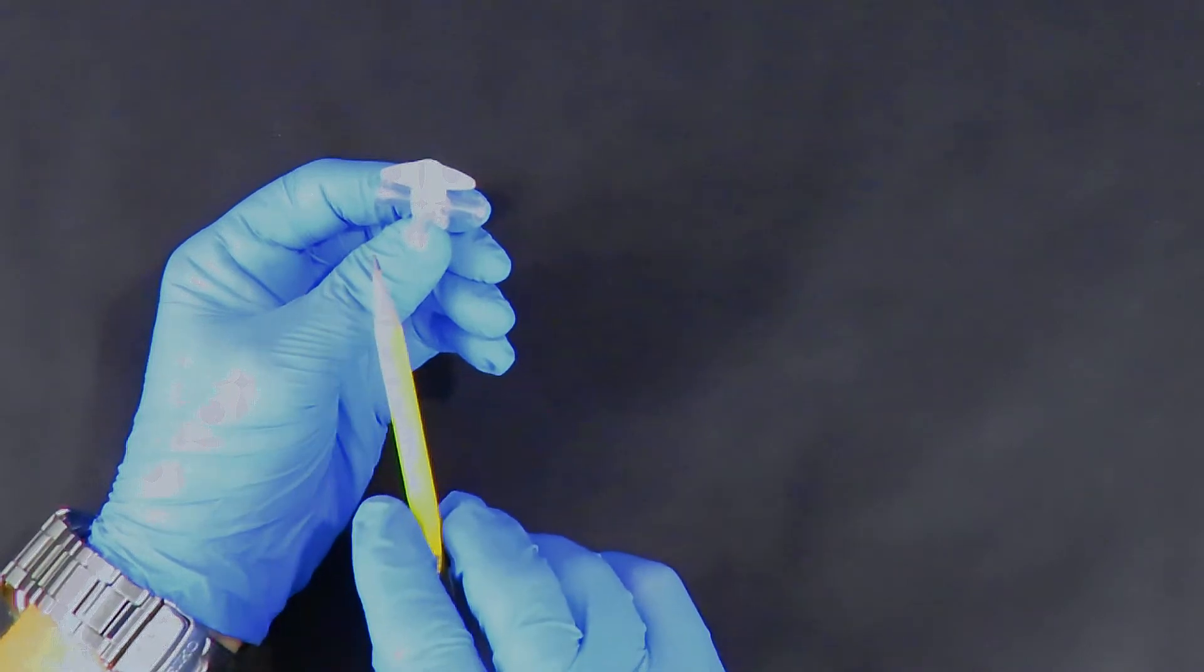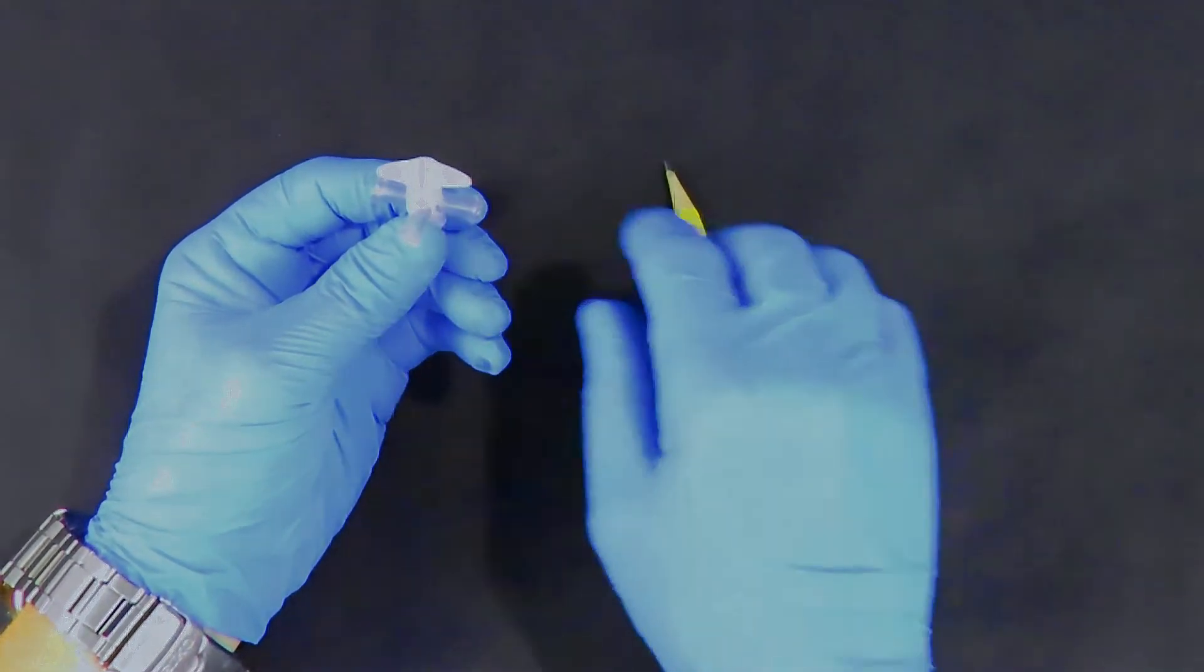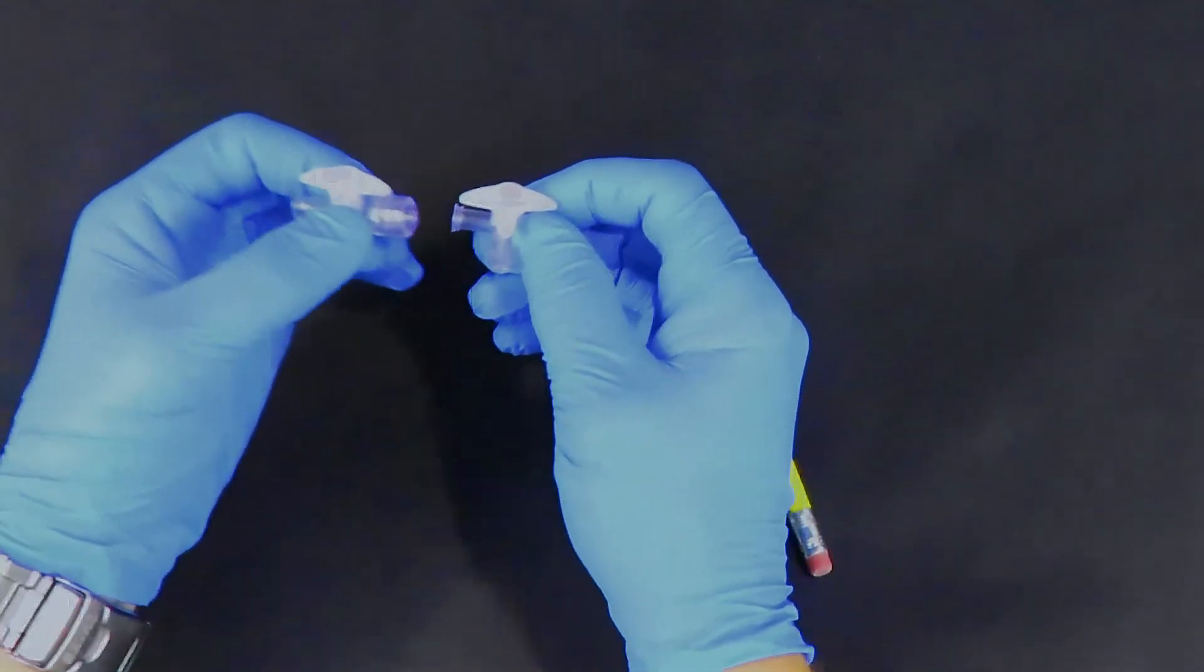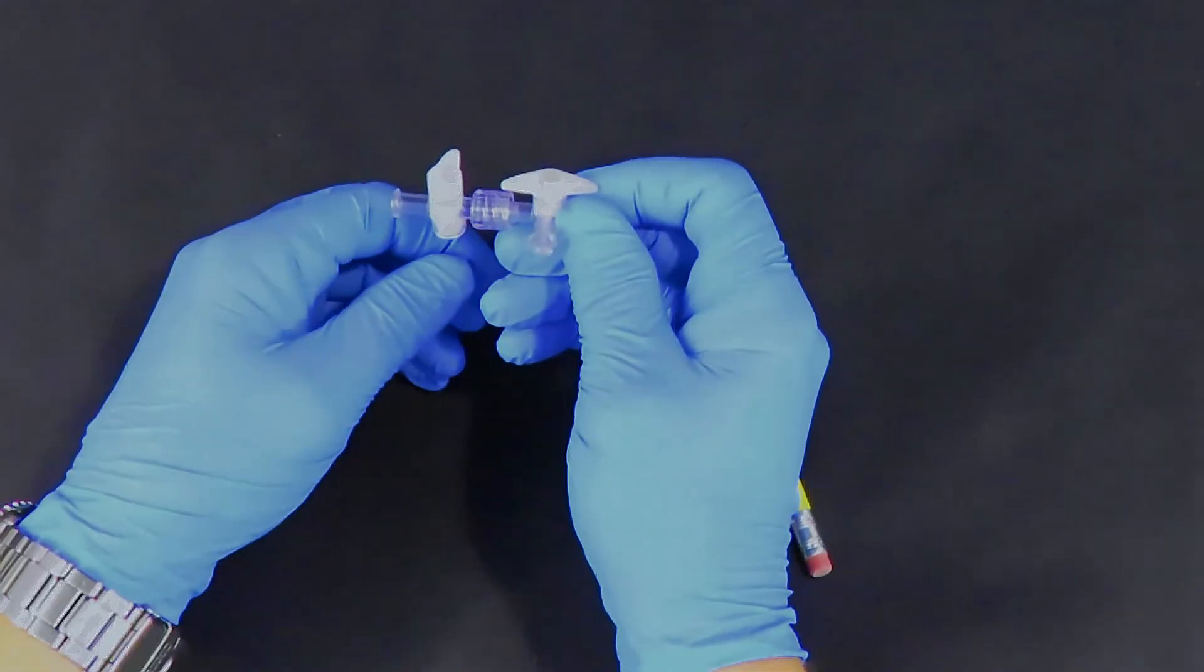One thing to keep in mind with a four-way stopcock is there is no off position. So if you need to shut flow completely off, you may have to incorporate a one-way stopcock in order to shut flow off.